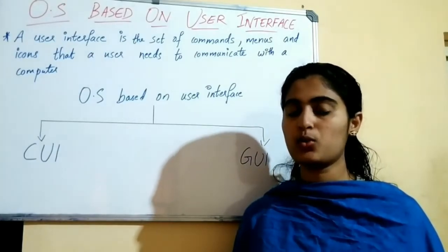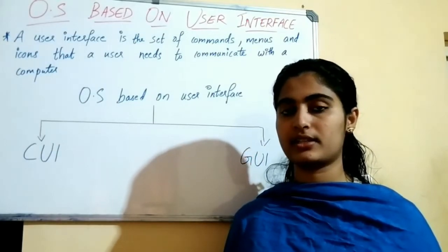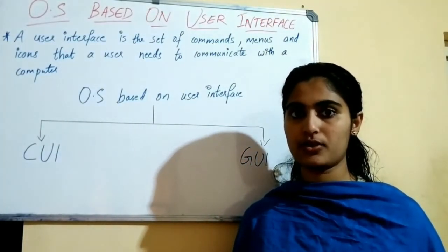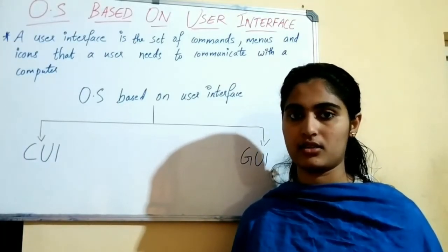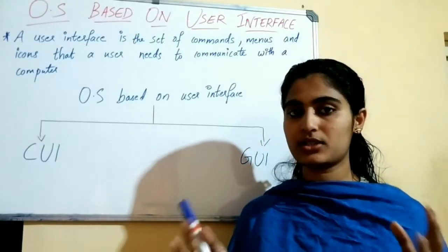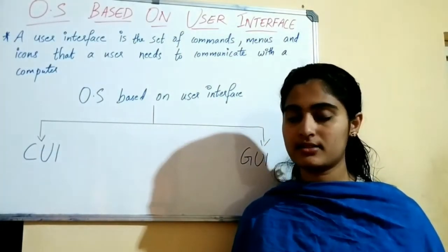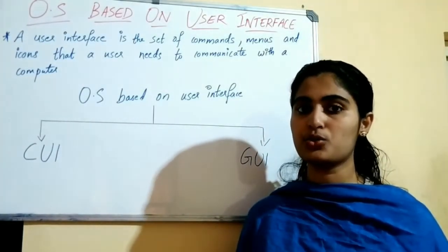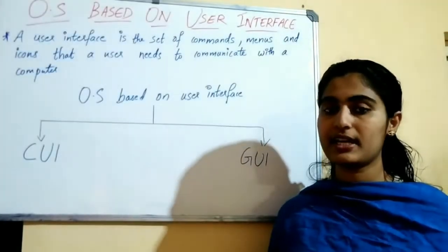Once the operating system gets loaded into the memory, you will be able to see your desktop. Inside the desktop you can see icons, menus, toolbar, buttons, etc. Basically, you communicate with your computer using these menus, icons, and toolbars. This is known as user interface — a set of commands, menus, and icons that a user needs to communicate with the computer.